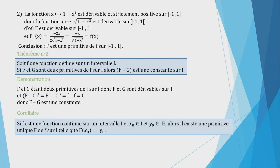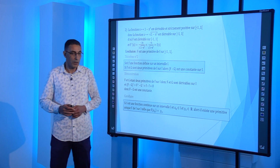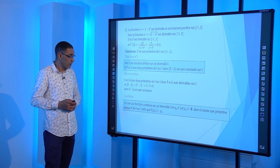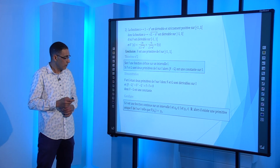Corollaire : si f est une fonction continue sur un intervalle I, x₀ appartient à I et y₀ est un réel quelconque, alors il existe une primitive unique grand F de petit f sur I telle que F(x₀) = y₀. Si on fixe un point x₀ dans le domaine de continuité et son image y₀, alors la primitive sera unique. Dans ce cas, on dit que grand F est « la primitive » qui vérifie cette condition.